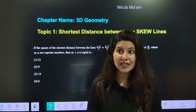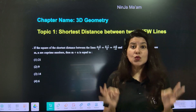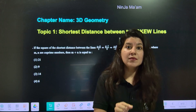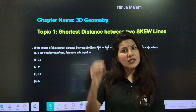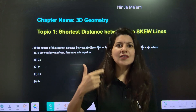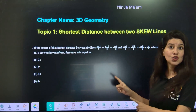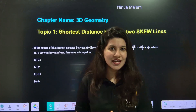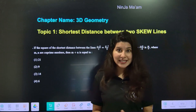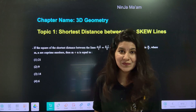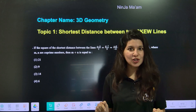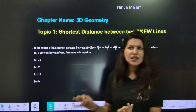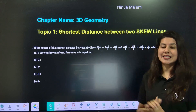Let's start with topic number 1. The chapter is 3D Geometry — specifically, shortest distance between two skew lines. The frequency in every attempt is very high from this topic. Almost every shift contains a question related to shortest distance between two skew lines. The question you are seeing right here is from JEE Main 2025. I have taken academic sessions on this — check the description box for links.